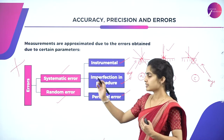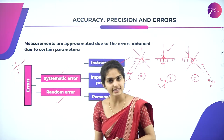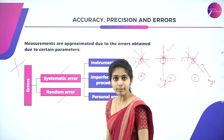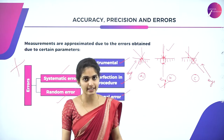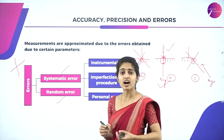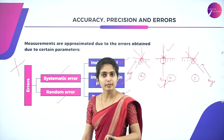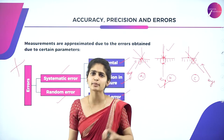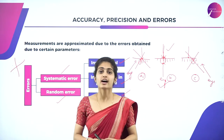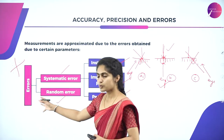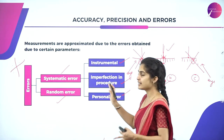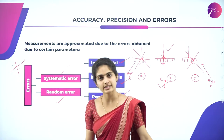To summarize: errors are of two types — systematic errors and random errors. Systematic errors include instrumental error, imperfection in procedure, and personal error. Random errors occur due to voltage, temperature change, or humidity — any surrounding atmospheric changes — and they occur irregularly.